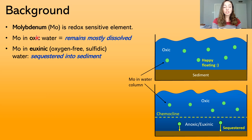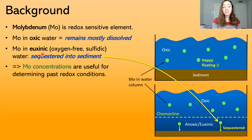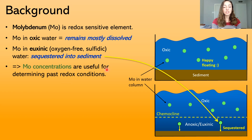In well-oxygenated or oxic conditions, molybdenum remains mostly dissolved in the water column, whereas in euxinic zones of the water column, molybdenum becomes sequestered into the sediment. Because of this sequestration only under certain conditions, molybdenum concentrations in ancient sediment are useful for determining past redox conditions.